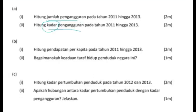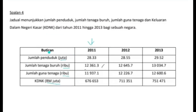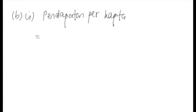Kita sambung soalan yang seterusnya - Soalan B, satu roman: hitung pendapatan perkapita. Rumus ini anda pun pernah belajar. Apakah rumus bagi pendapatan perkapita? Pendapatan negara bahagi jumlah penduduk. Lebih spesifik, anda sepatutnya guna KDNK bahagi jumlah penduduk. Kalau anda sebut pendapatan negara sahaja, itu sebenarnya KNPKF. Tetapi disebabkan dalam jadual kita tak ada, jadi kita akan guna KDNK bahagi jumlah penduduk. Pastikan rumus yang anda sediakan itu ditulis sedemikian.